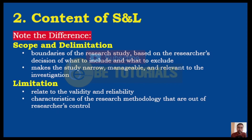Let us note the difference between the terminologies. If we say scope and delimitation, it pertains to the boundaries that are controlled by the researcher. This makes the study narrow, manageable, and relevant to the investigation. When we say limitation, this pertains to the validity and reliability concerns in our research — those that are out of the researcher's control, especially in terms of the research methodology.